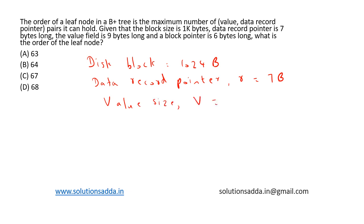The value size V is 9 bytes, and disk block pointer P is equal to 6 bytes.